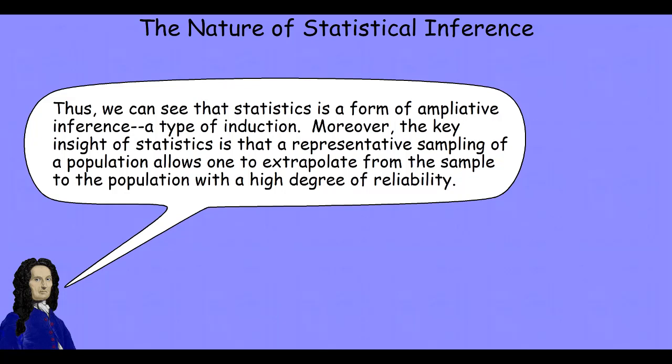And the key insight that drives statistics is that a representative sampling of a population allows one to extrapolate from the sample to the population with a high degree of reliability. And really, it's even more powerful than that. We can make that inference. We can determine the degree of epistemic risk, how reliable that inference is. And we can even manipulate the form of that inference to manipulate the amount of risk, to manage the risks that we take in making those inferences. And that is an incredibly powerful thing. And it's really only been available to human beings for a very short period of time.